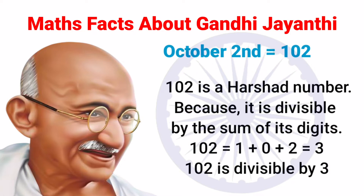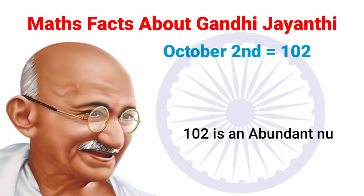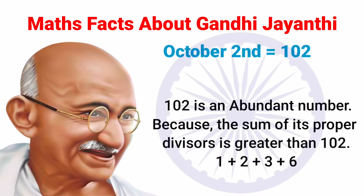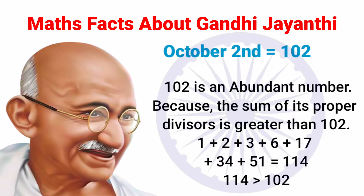The second way is 2² + 3² + 5² + 8². Next, 102 is a Harshad number because it is divisible by the sum of its digits — that is, 1 + 0 + 2 = 3, and therefore 102 is divisible by 3.